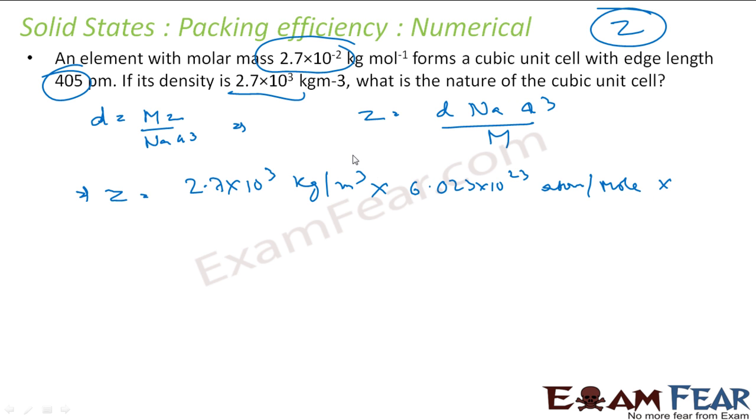A³ - since this is meter cube, we have to convert A into meters: 405 picometers = 405 × 10^-12 meters, and we give the whole cube. Divide by M. M is molar mass. So molar mass, if you see, has to be in kg now because this is kg and kg has to cancel. So molar mass is given as 2.7 × 10^-2 kg/mol.